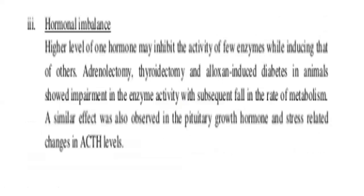Next is hormonal imbalance. Higher levels of hormones may inhibit the activity of some enzymes while inducing others. For example, in adrenalectomy or thyroidectomy, removal of the thyroid gland causes variation in enzyme levels. Alloxan-induced diabetes in animals also shows variation in enzyme activity, altering the rate of metabolism. Pituitary growth hormone and stress-related changes in ACTH levels also affect the rate of metabolism.